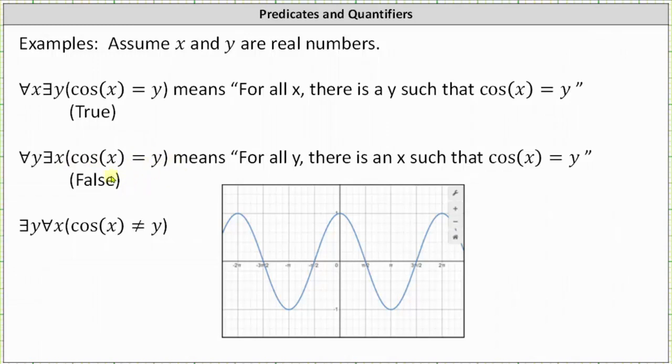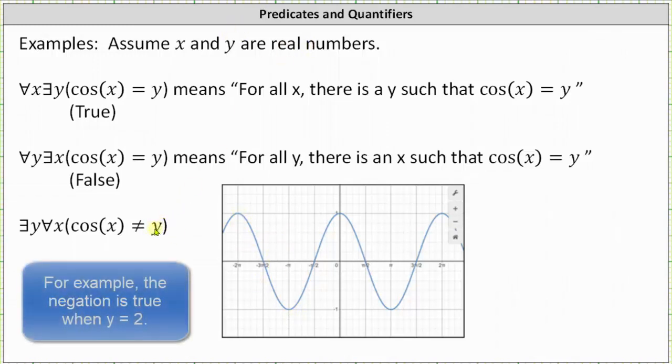And if we take a look at the negation of the given quantified statement, we would have there exists a y for every x such that cosine(x) doesn't equal y. And this is true because remember y is always on the closed interval from negative one to one, but we stated at first that y could be any real number. And therefore, there does exist a y for every x where cosine(x) doesn't equal y, which is why the given quantified statement is false.